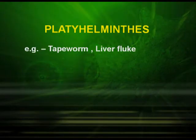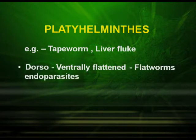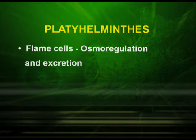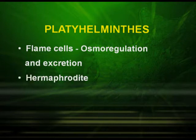Phylum Platyhelminthes. The organisms included under Platyhelminthes are tapeworm and liver fluke. They are dorsoventrally flattened, as we can see in flatworms, and they are also endoparasites. Few of them are found in the human body as well. They are bilaterally symmetrical and triploblastic organisms, with the presence of ectoderm, endoderm, and mesoderm. They are acoelomate and have organ level of organization. They have flame cells, which are meant for osmoregulation and excretion. They are hermaphrodite animals.